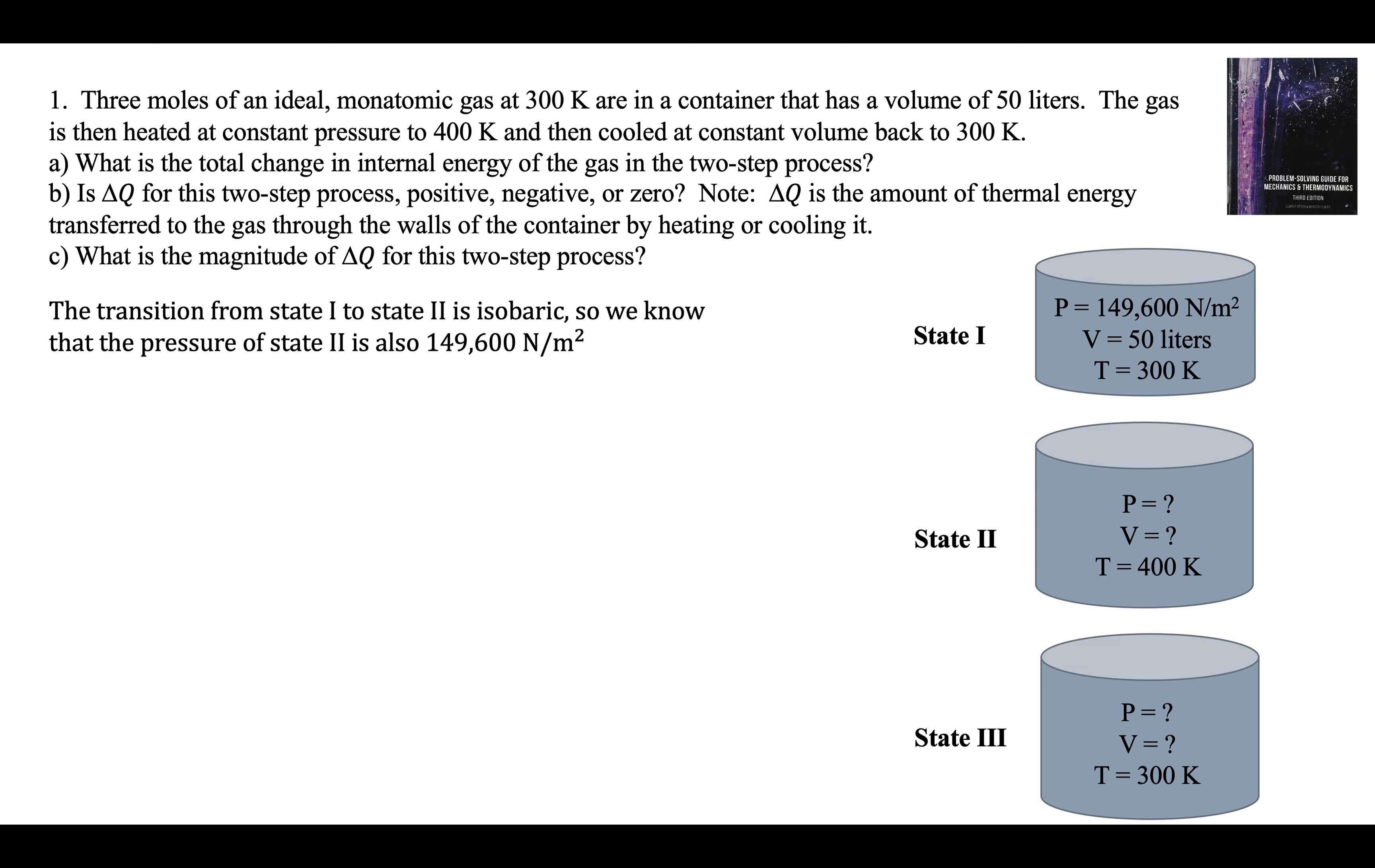The transition from one to two is isobaric, same pressure. So we know the pressure of state two is also 149,600 newtons per square meter. Now we can use the ideal gas law to get the volume of state two. PV is equal to nRT. Solving for V, substituting in the numbers.